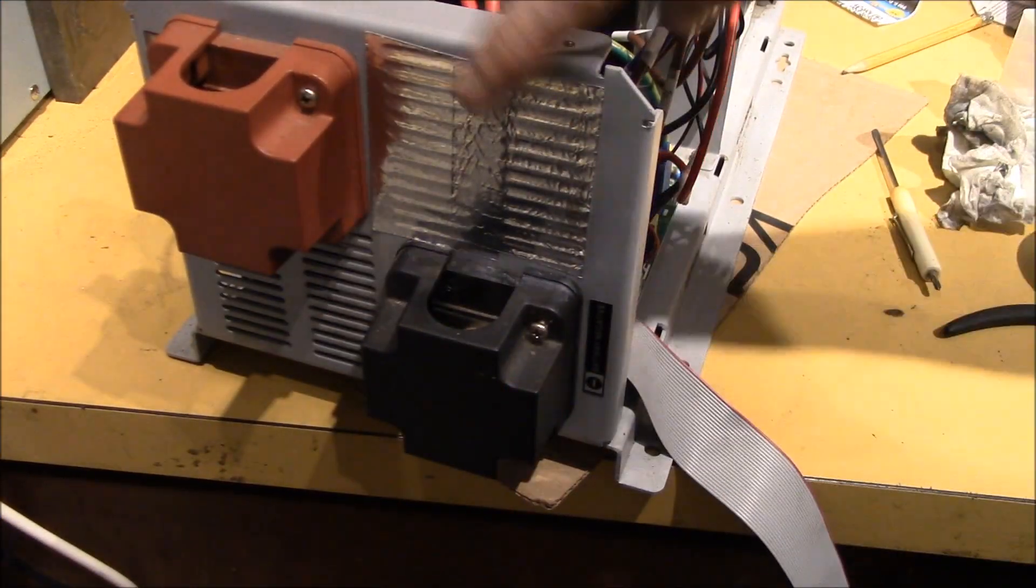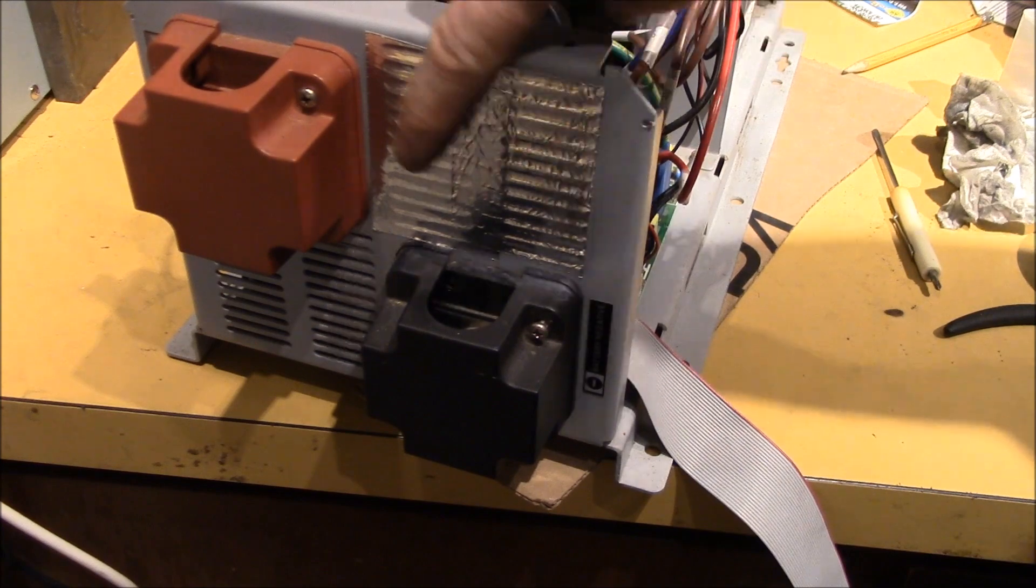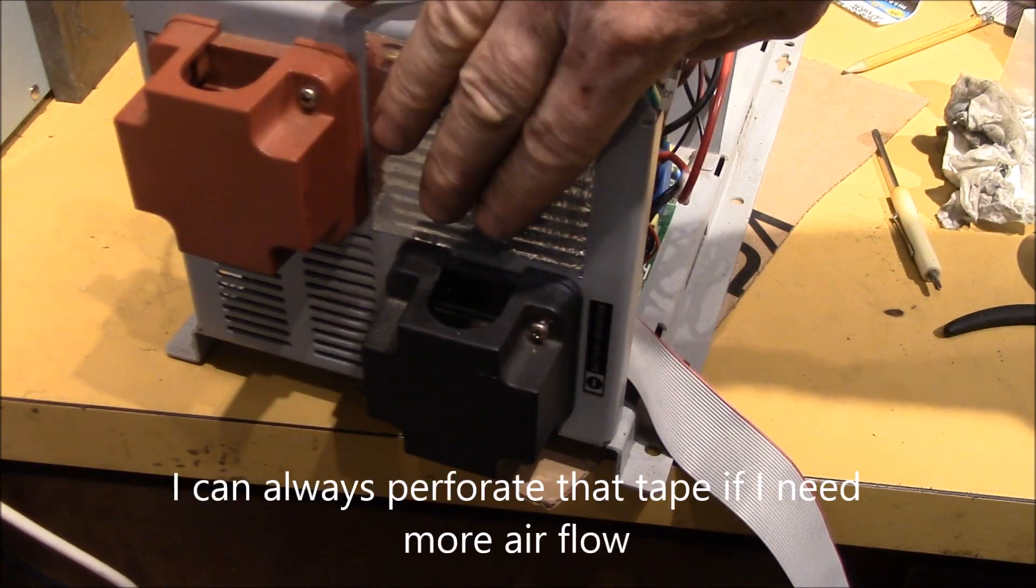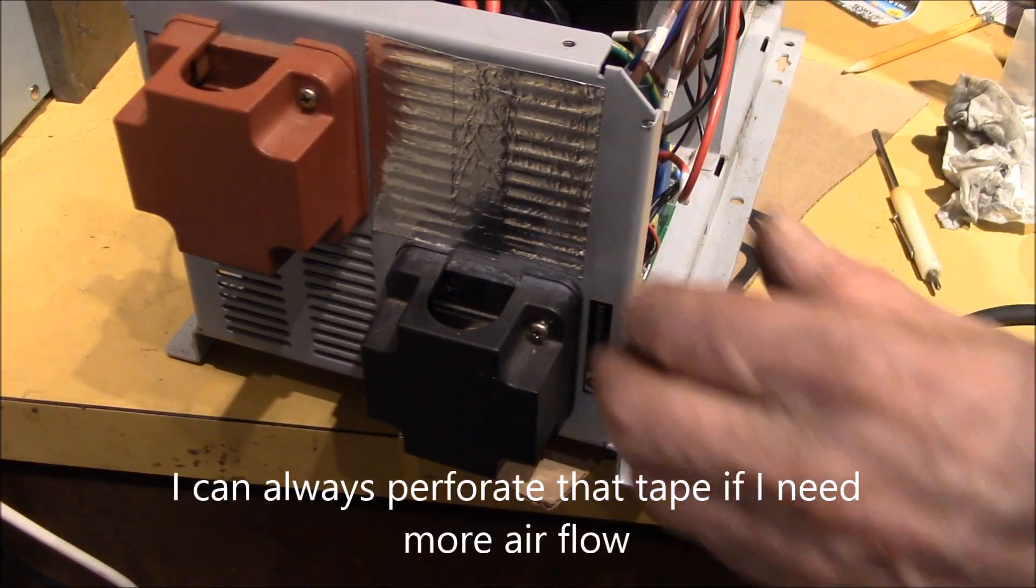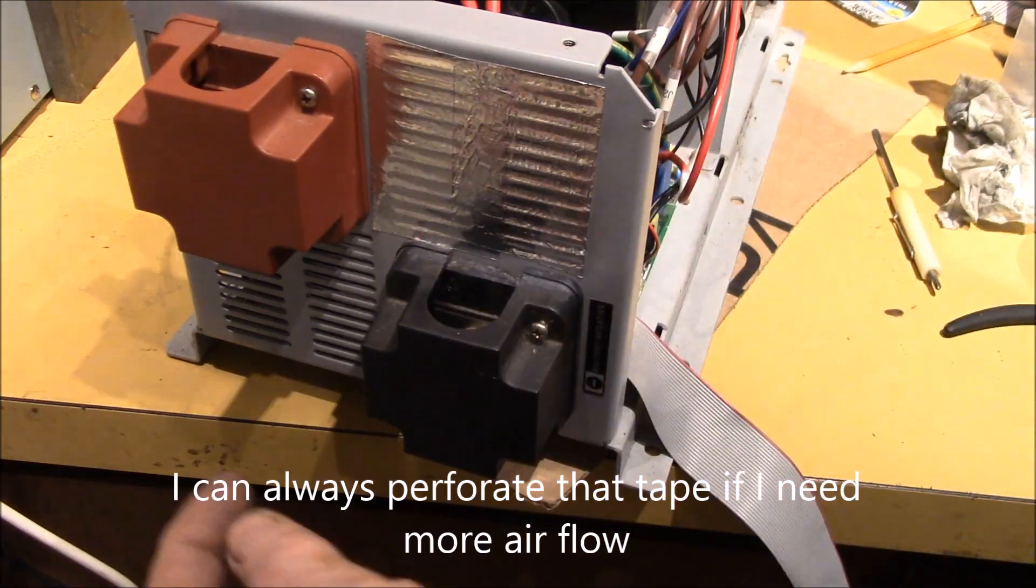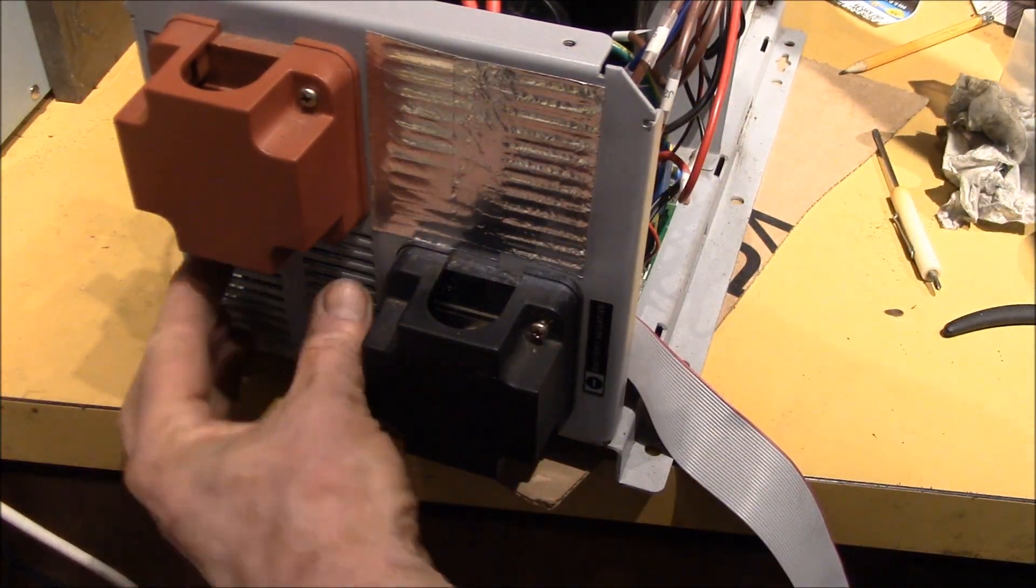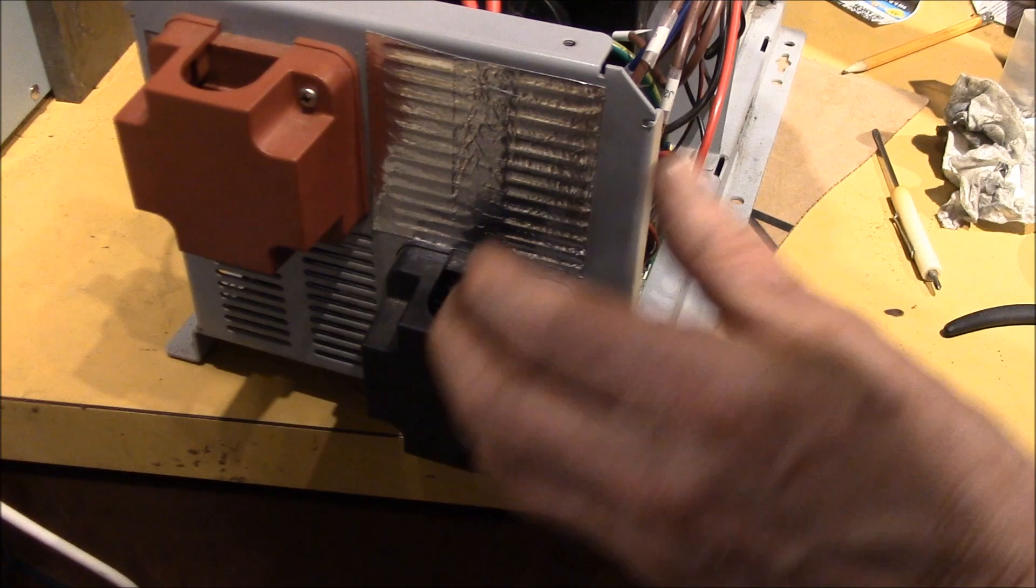Okay, I think we've got it back together. I put some aluminum duct tape here over this grill on the negative side. So that should block that off, and just allow air in right here where the heat sinks are.